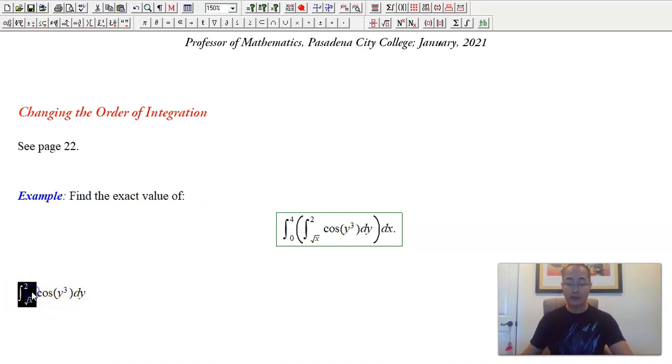But right now, we have cosine y cubed dy. There is no x. Everything is in y. So how would we find an antiderivative for that function? You know what? I didn't ask Maple. Maybe Maple knows. I doubt it. Yeah, Maple doesn't know. So when this happens, it means, sorry bud, I don't have an answer to your question. So basically, that's what happened earlier.